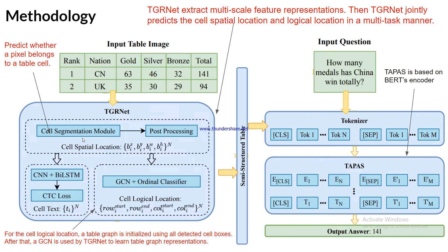The cell segmentation module predicts whether a pixel belongs to a table cell or not. If a pixel belongs to a table cell it is further processed; otherwise it is ignored as not part of the table. After the cell segmentation module, post-processing produces the cell spatial location as bounding box information — in the form of (x, y, width, height). This bounding box information goes to a CNN with LSTM, over which they find the CTC loss for cell text.